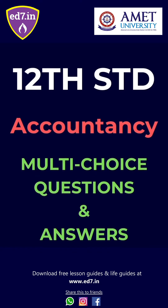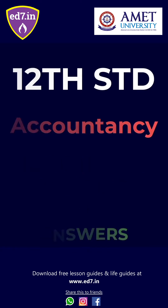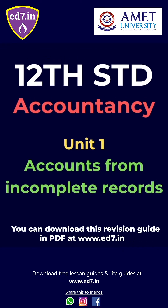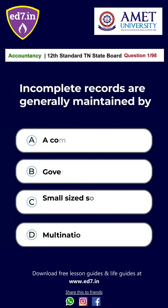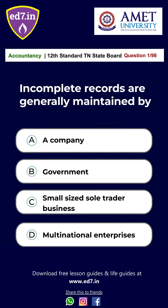12 standard accountancy multiple-choice questions and answers, Tamil Nadu board. Unit 1: Accounts from Incomplete Records. Question 1: Incomplete records are generally maintained by — option A: a company, option B: the government, option C: small size sole trader business, option D: the multinational enterprise. The answer is option C: small size sole trader business.